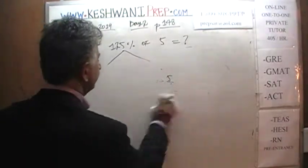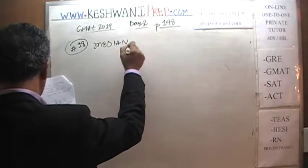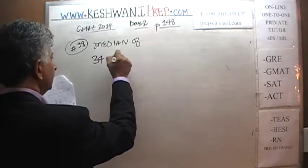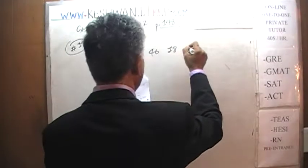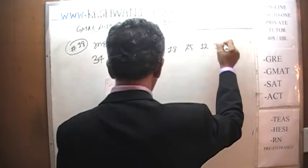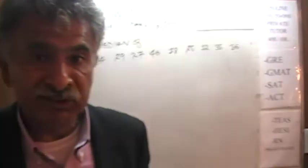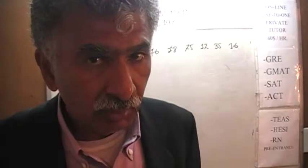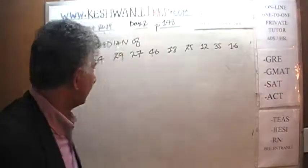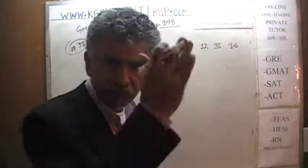Number eighteen. In number eighteen we are supposed to find the median of: 34, 29, 27, 46, 18, 25, 12, 35, and 16. Since we are asked to find the median, we have to find how many readings we have. If we have an even number of observations, the median is the average of the middle two. If we have an odd number, the median is simply the middle one. Let's count: one, two, three, four, five, six, seven, eight, nine. There are nine of them — so four on each side, and the fifth one in the middle is the median.